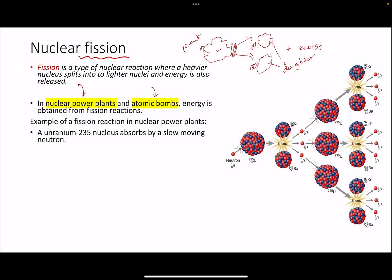When uranium splits it can produce two other types of elements as well. During the splitting, three neutrons are also emitted by the uranium nucleus. If you balance the equation, the proton numbers — 92 plus 0 on one side, and 56 plus 36 plus 0, 0, 0 on the other — balance out. The mass numbers also balance: 1 plus 235 equals 141 plus 92 plus three neutrons.